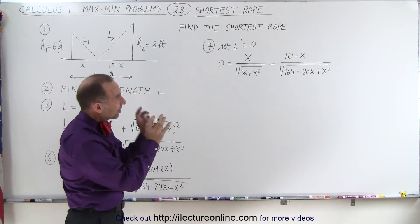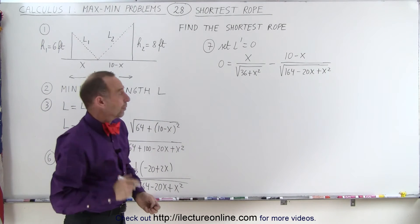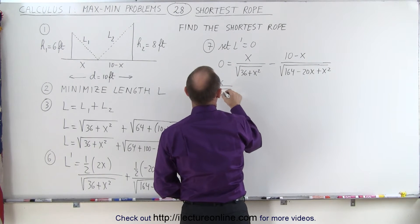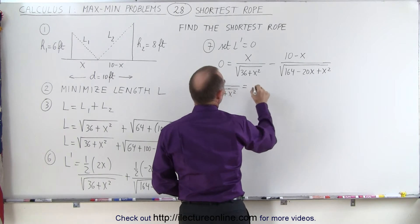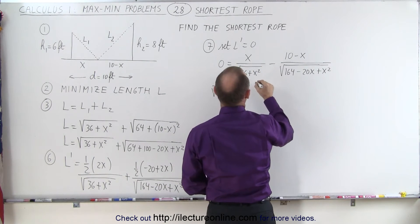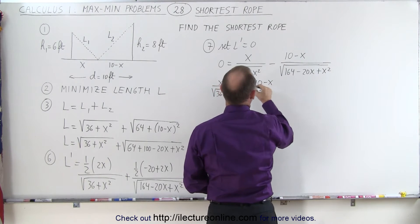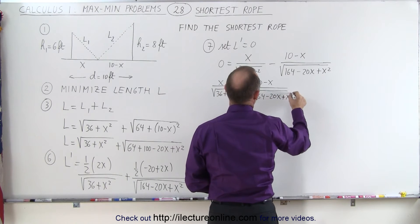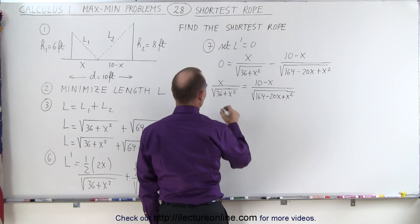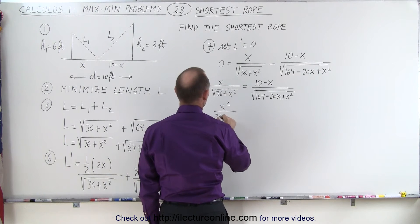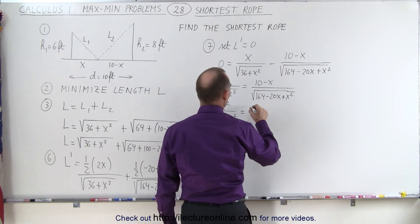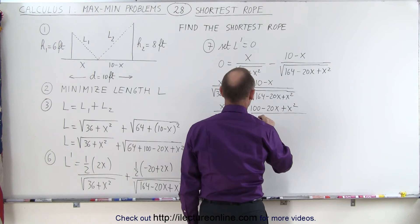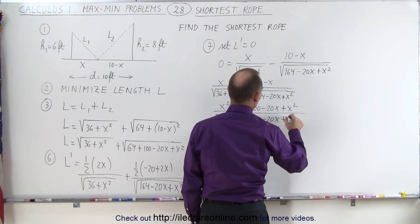How do you solve that for x? We can separate the two terms and square both sides to get rid of the radicals. On the left side we get x divided by the square root of 36 plus x squared, equal to 10 minus x divided by the square root of 164 minus 20x plus x squared. Squaring both sides gives x squared divided by 36 plus x squared, equal to 100 minus 20x plus x squared divided by 164 minus 20x plus x squared.